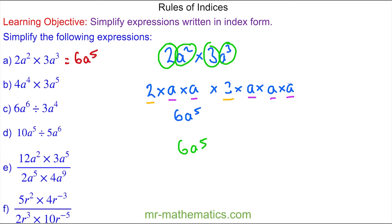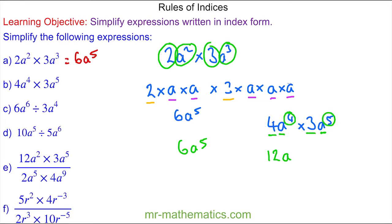For question B we have 4a to the power of 4 multiplied by 3a to the power of 5. What we need to do is multiply the 4 by the 3 to make 12, and then because this a and this a are the same base we can apply the multiplication rule — so we add the two powers — which gives 12a to the power of 9.